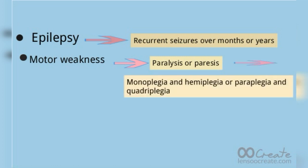Power loss may manifest as monoplegia — weakness of one limb — or hemiplegia — weakness of half the body, usually seen in intracranial disease. It may also manifest as paraplegia — weakness of both lower limbs — or quadriplegia — weakness of all four limbs. Paraplegia and quadriplegia are usually seen in spinal cord lesions.